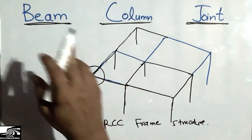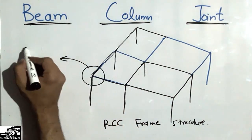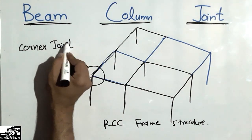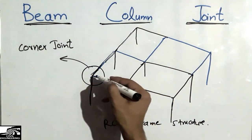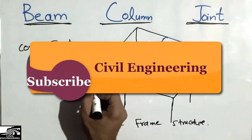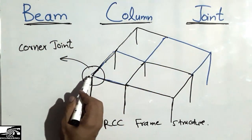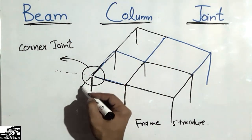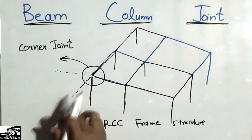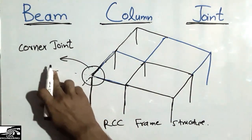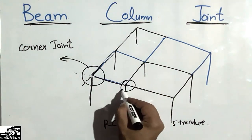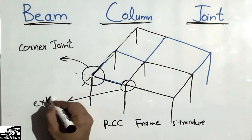There are three different types of beam-column joints. The first is the corner joint. In a corner joint, the beam reinforcement goes into the column from one side only — it cannot go into the other side — which is why we call it the corner joint. The second type is the exterior joint.